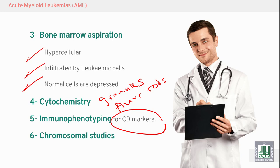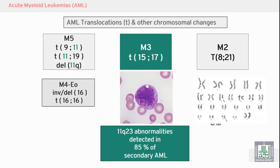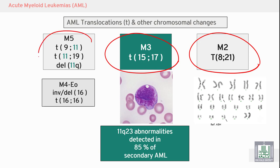Myeloid markers are used for M1, M2, and M3. Chromosomal studies can diagnose certain leukemias with blast cells less than 20% if a specific chromosomal abnormality is found. For example: translocation (15;17) in M3, translocation (8;21) in M2, and translocation (9;11) or (11;19), or deletion 11q in M4. A special type of M4 is characterized by inversion of chromosome 16, deletion of part of chromosome 16, or translocation (16;16).